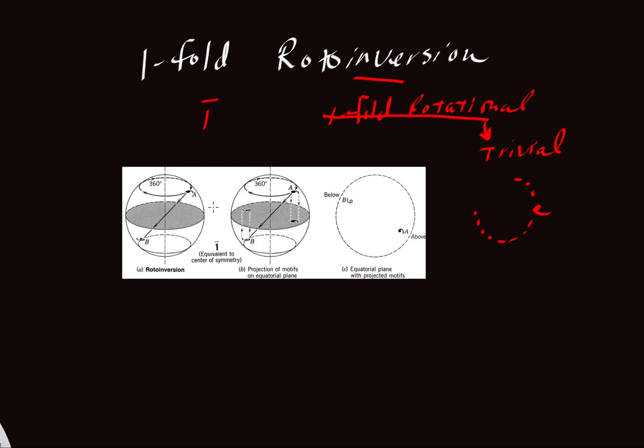And we're going to use this example here using a figure from Klein and Dutro. They have an original motif here, in this case a comma. They're going to rotate it 360 degrees, which is, again, that boring trivial case, which just gives us this same comma back. So nothing interesting there.